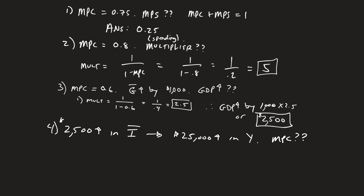Well, what do we know here? We can see that if 2,500 led to 25,000, the multiplier is equal to 10. It was a 10 times multiplier.